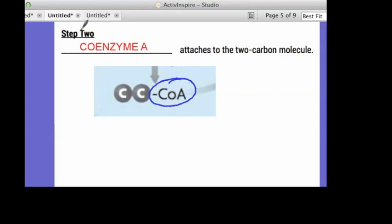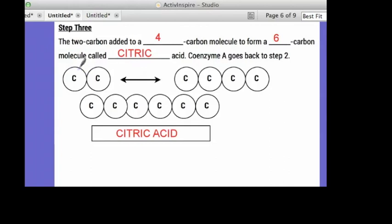This is step two. So the two carbon molecule right here is added to this four carbon molecule right here to form a total of two plus four is six. You guys are good at basic math. To form a six carbon molecule called citric acid. Coenzyme A leaves and goes back to step two.